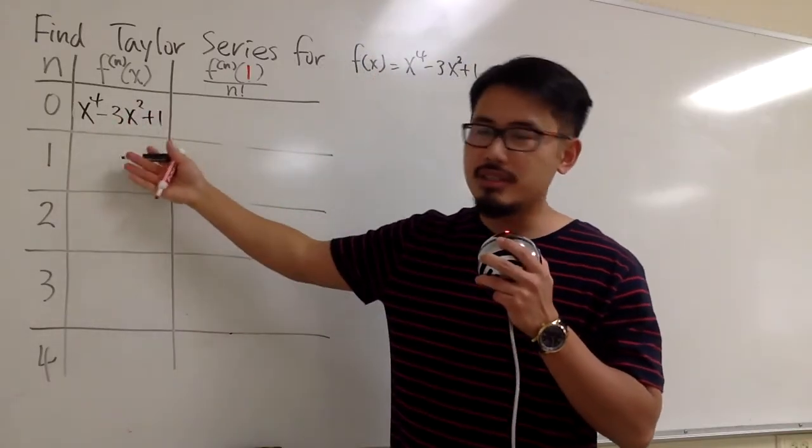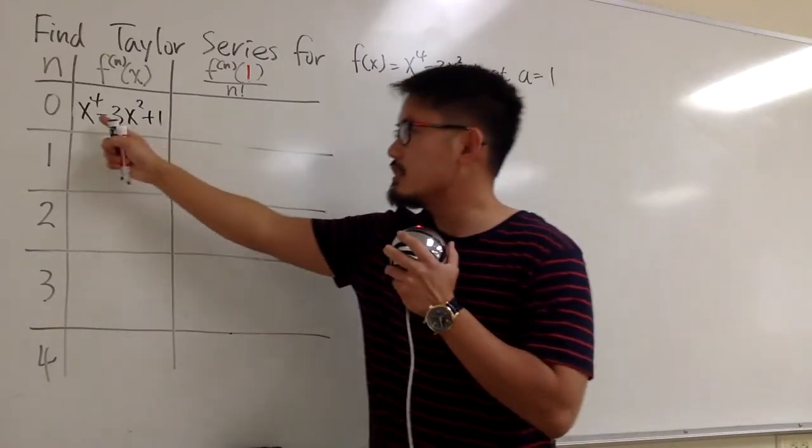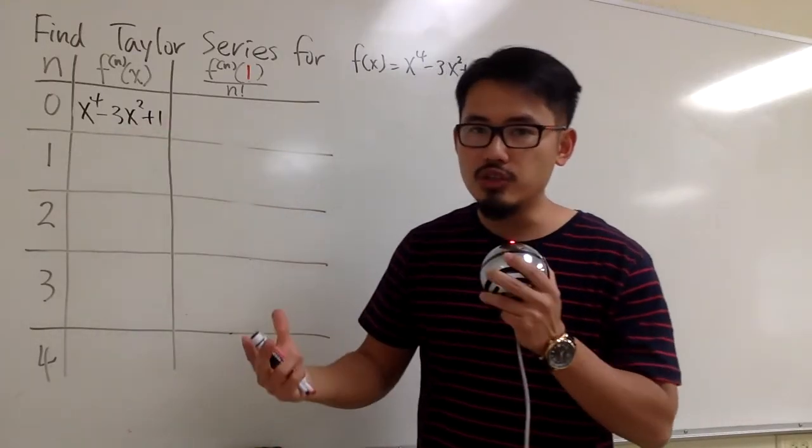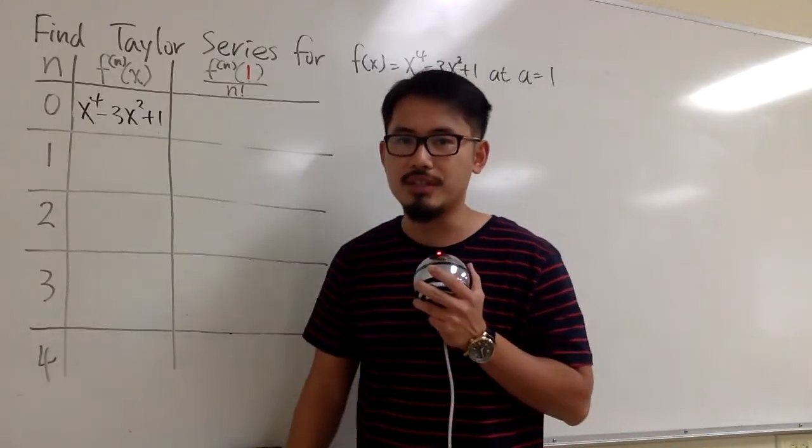And then we have to differentiate this four times. Hopefully that's enough. But we know this is a polynomial, and when we differentiate a polynomial enough times, we know eventually we'll get zero for the derivative.